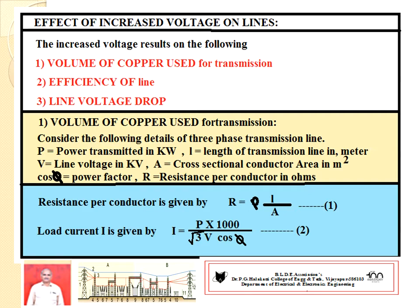Develop the equations step by step. Resistance per conductor: R = ρL/A (resistivity times length divided by cross-sectional area). For a three-phase line, power P = √3 · V · I · cos φ, where V is line voltage and I is line current. Since P is in kilowatts, convert to watts (P × 1000) and develop the expression for load current, as shown in expression 2.